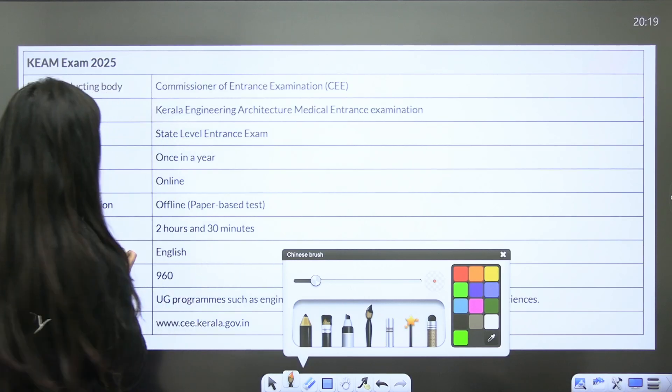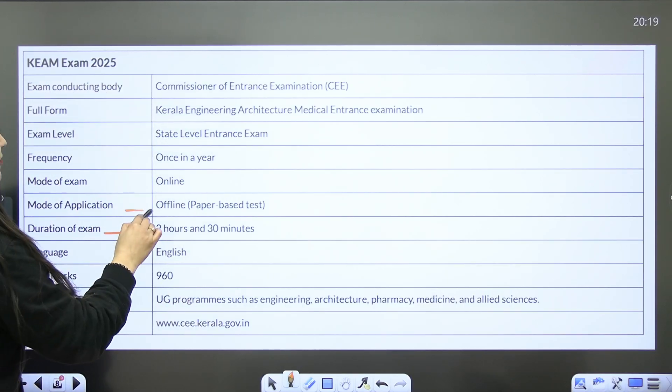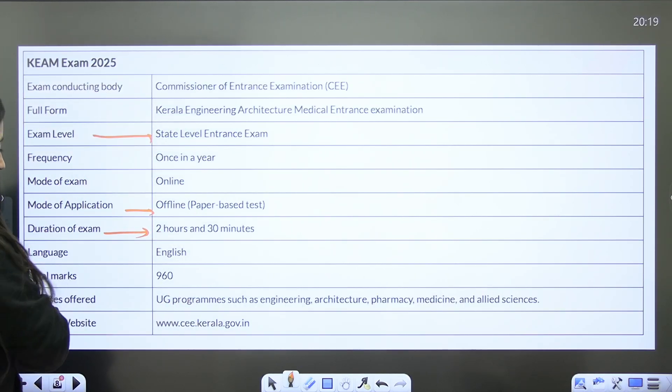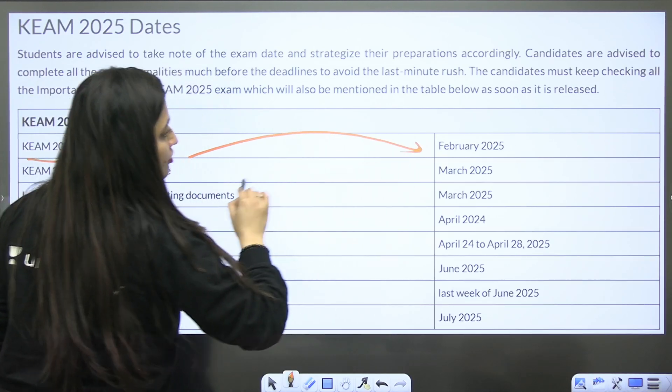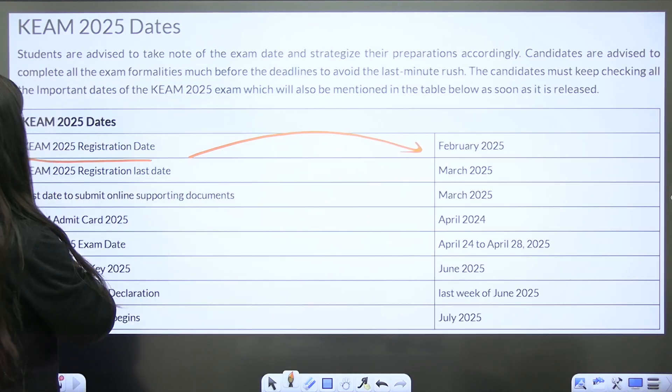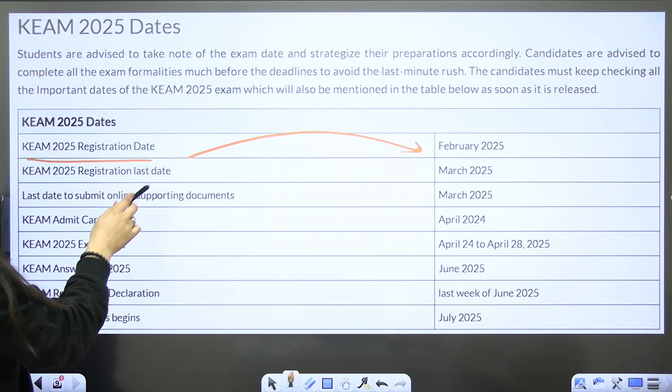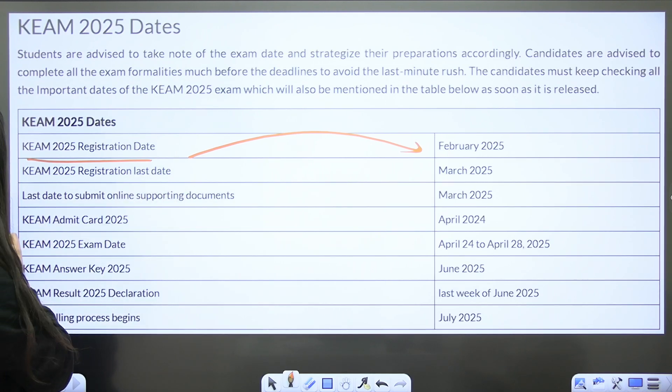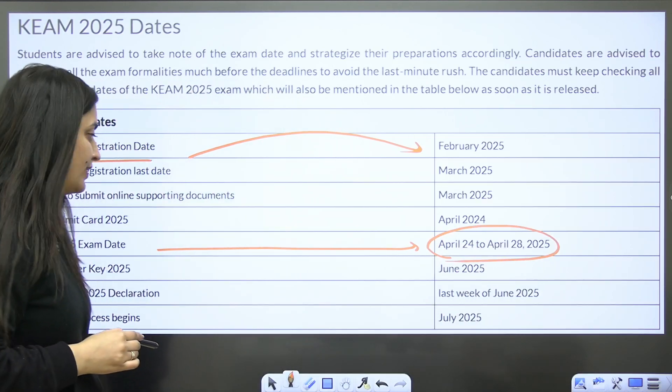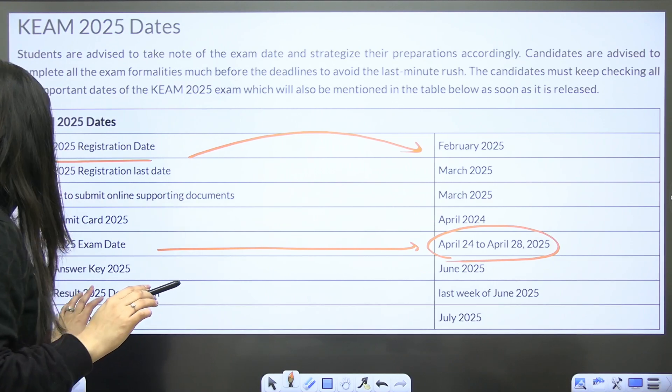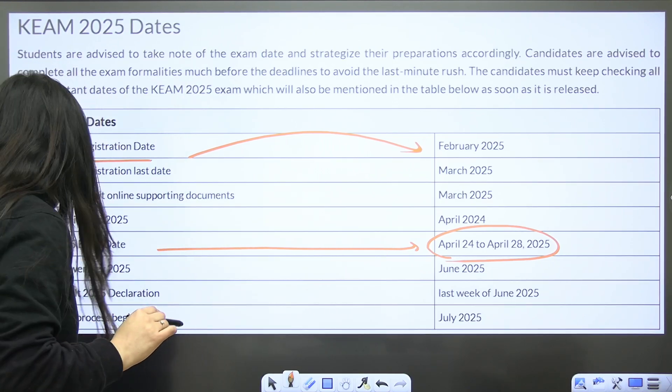Okay, so when we talk about this particular exam, here you guys can see the duration for exam is 2 hours 30 minutes. Offline paper is there. It's a state level entrance examination. Total marks will be 960. And here you can see the registration will start in the month of February, so stay updated, and the last date will be March. And the exam date will be April 24th to 28th.